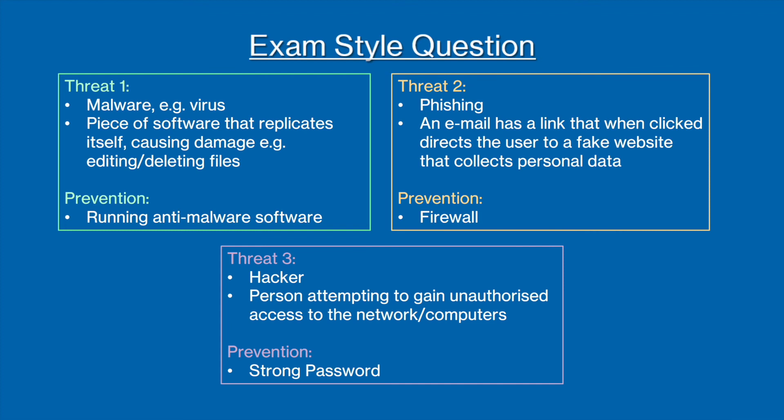Another threat we could have is phishing, which is where an email link is sent and when clicked it directs the user to a fake website that collects all of their personal data. We saw earlier in this video that as well as protecting against unauthorized access, firewalls are good at blocking dangerous links or websites, so in this situation a firewall would be a good prevention method.